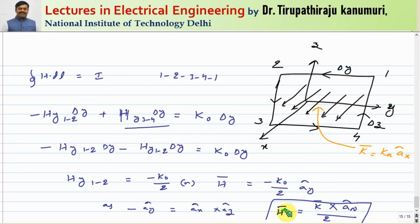I hope how to calculate the field intensity using Ampere's Circuit Law for the case of an infinite line charge and an infinite sheet of current is completely clear. If you still have any queries, please leave your comments in the comment section below and I will answer them. Thank you very much.